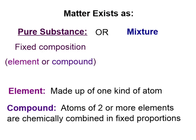So what is a compound? That's the other kind of pure substance. We know an element is made of one kind of atom. A compound is made of two or more elements combined chemically in a fixed proportion, meaning there have to be at least two different kinds of atoms in order to be a compound.